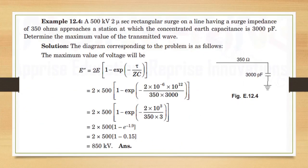Numerical: A 500 kV, 2-microsecond rectangular surge on a line having a surge impedance of 350 ohms approaches a station at which the concentrated earth capacitance is 3000 pF. Determine the maximum value of the transmitted wave. Maximum voltage: e″ = 2e × (1 − e^(−τ/ZC)) = 2×500×(1−e^(−1.9)) = 2×500×(1−0.015) = 850 kV approximately.